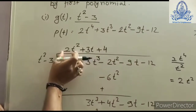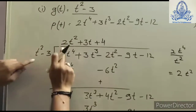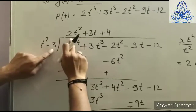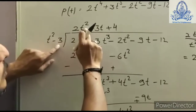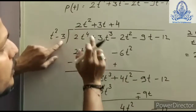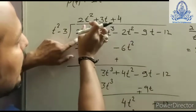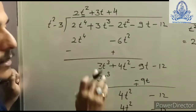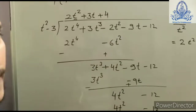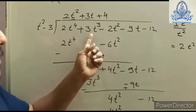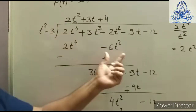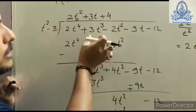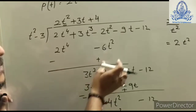We multiply the first term of the quotient 2t² with both terms of the divisor: 2t² × t² = 2t⁴, and 2t² × (−3) = −6t². We write like terms under like terms, so 2t⁴ goes under 2t⁴ and −6t² goes under the t² column. The t³ place is left vacant since there is no like term to combine with.